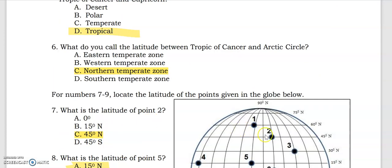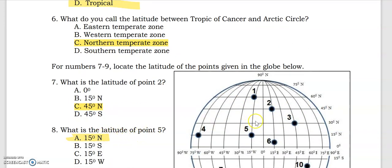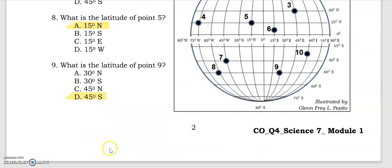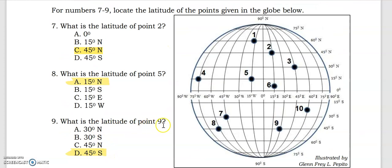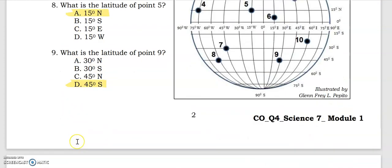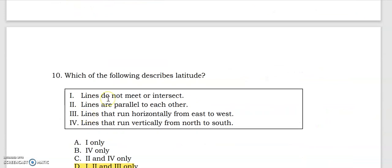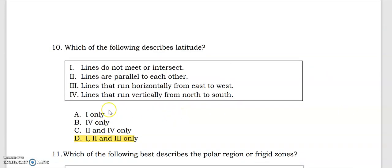What is the latitude of point 2? That's 45 degrees. What is the latitude of point 5? That's 15 degrees. What is the latitude of point 9? That's 45 degrees south. Which of the following describes latitude? Its lines do not meet or intersect, lines are parallel to each other, and lines run horizontally from east to west.